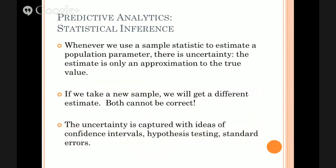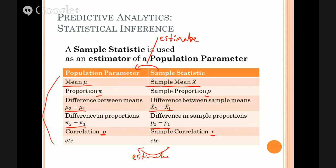If you want to know something about a whole population of data, get a sample, calculate the sample equivalent and use it as an estimate — that's fine and intuitively obvious. But there's one very big extra step: any time you do that, you're probably not going to get exactly the right answer. You're using a sample statistic to estimate a population parameter, and the estimate is only an approximation to the true value. So my sample mean will not be the population mean — it will be an estimate of it, and estimates are very rarely exactly right. It might be a little bit too big, it might be a little bit too small, but it's only an estimate.